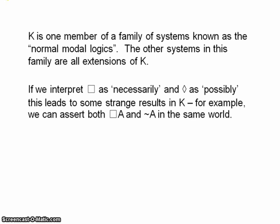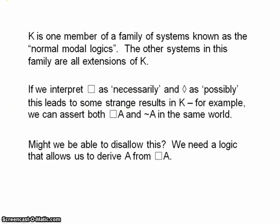So it seems like one natural alteration we might want to make would be to disallow this kind of thing. So we want to include in our logic that if we have necessarily A, then you can derive A in the same world. So that is, if the value of necessarily A at our world W0 is equal to 1, then the value of A at this world W0 is also equal to 1.